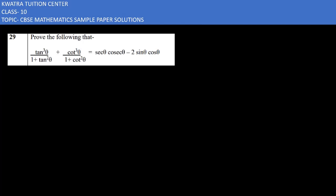Now we have a trigonometric question where we have to prove that the left side equals the right side. The left side given is: tan³θ/(1 + tan²θ) + cot³θ/(1 + cot²θ). We begin by writing tan³θ as sin³θ/cos³θ.